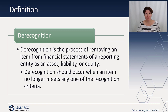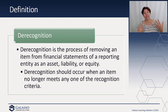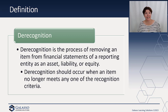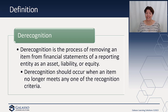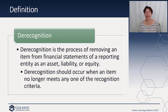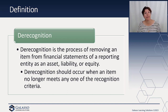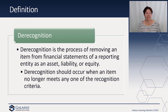They didn't just address recognition — they also included derecognition, because things come off the books, whether being sold or no longer in use. Derecognition is the process of removing an item from the financial statements of a reporting entity as an asset, liability, or equity. This should occur when an item no longer meets one of the recognition criteria. An item should not continue to be recognized if it does not meet the definition of an element, as that would violate the recognition criteria. Derecognition is taking it off the books.